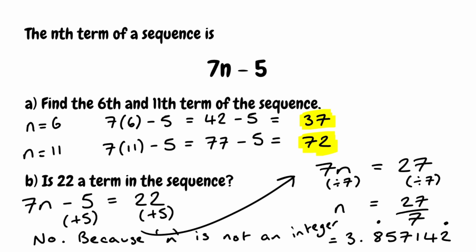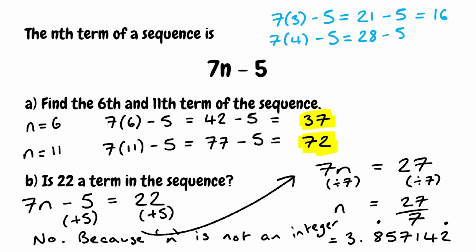We can actually check this: because n is 3.8 something, 22 falls between term number 3 and term number 4. Term 3 is 7 times 3 take away 5, which is 21 minus 5 equals 16. Term 4 is 7 times 4 take away 5, which is 28 minus 5 equals 23. So we can see that 22 falls between these two terms.